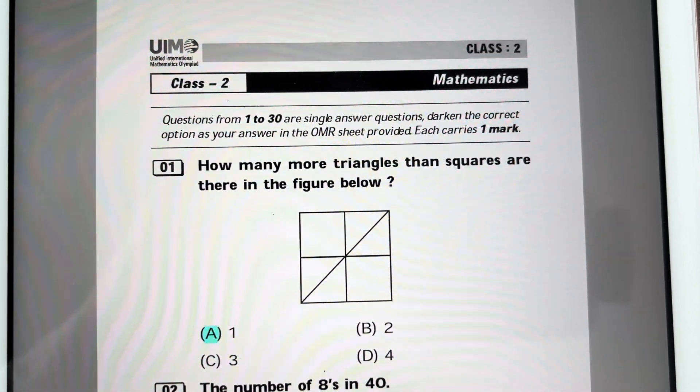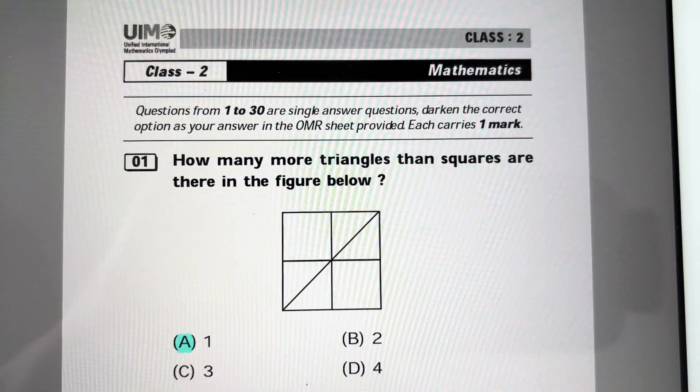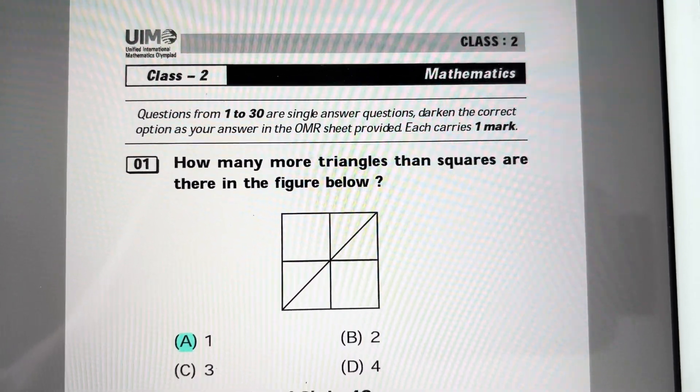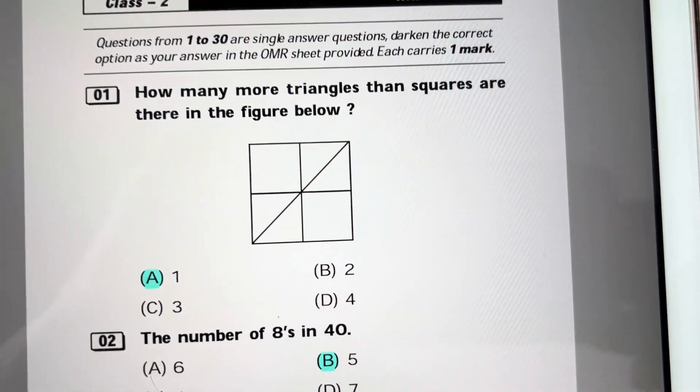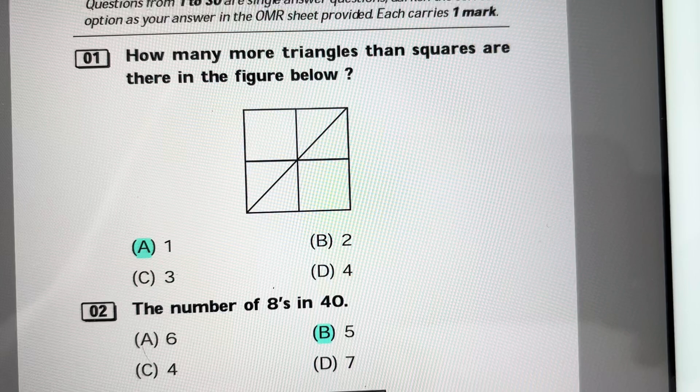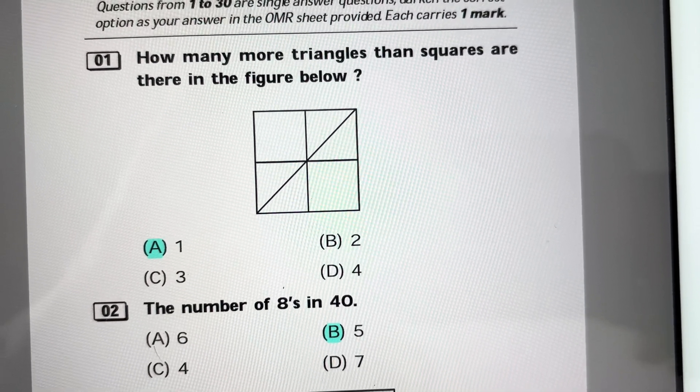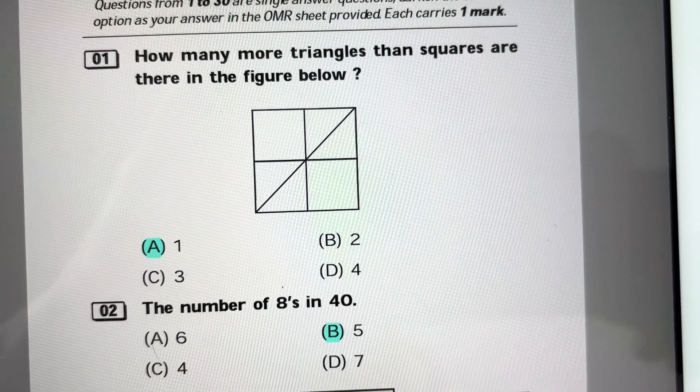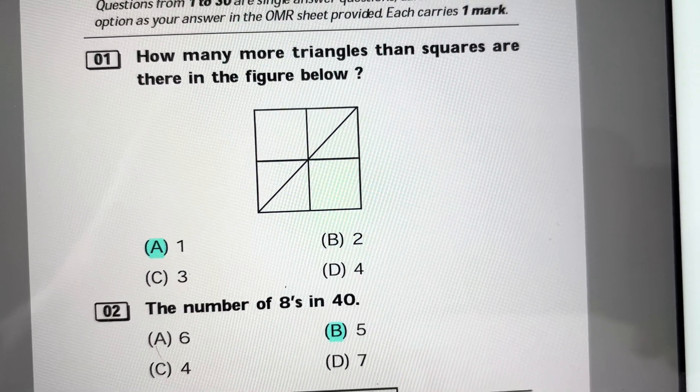Hello friends, today I am going to discuss the question paper of UIMO, that means Unified International Mathematics Olympiad for class 2. Question 1: How many more triangles than squares are there in the given figure? You can see that there are 1, 2, 3, 4, 5 squares and 1, 2, 3, 4, 5, 6 triangles, so the answer is 6 minus 5 equals 1. Answer is A.